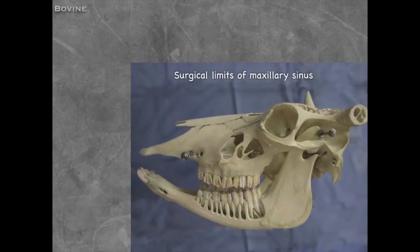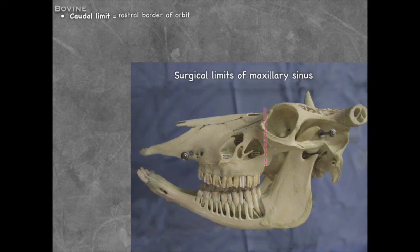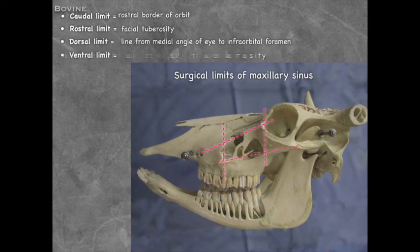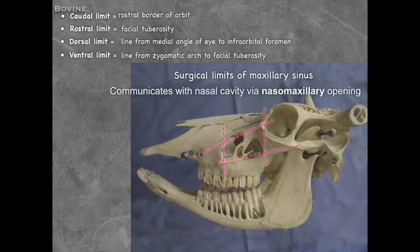Surgical limits of the bovine maxillary sinus: the caudal limit is the rostral border of the orbit; the rostral limit is the facial tuberosity; the dorsal limit is a line from the medial angle of the eye to the infraorbital foramen; the ventral limit is a line from the zygomatic arch to the facial tuberosity. Communication with the nasal cavity is via the nasomaxillary opening. Infections in the bovine maxillary sinus are uncommon — problems are generally found above and caudal to the facial tuberosity.